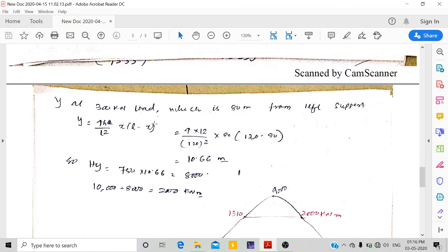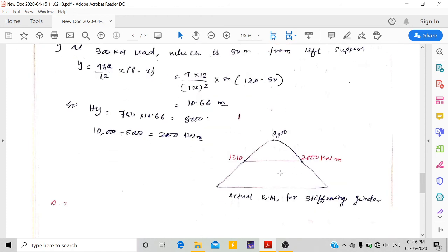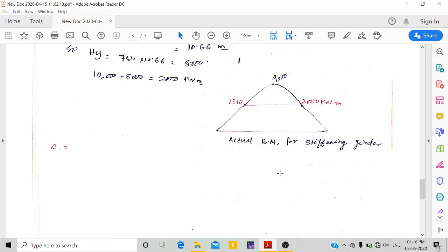Under the 300 kN load, we calculate similarly. This is our actual bending moment for the stiffening girder. Thank you for watching.